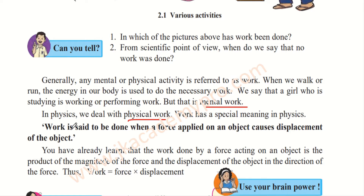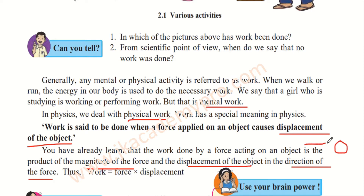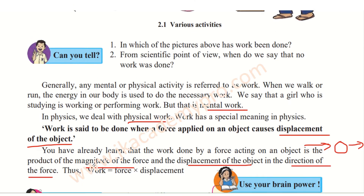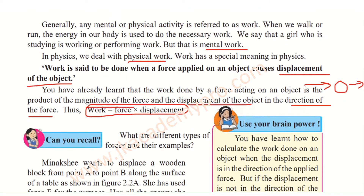Work has a special meaning in physics. Work is said to be done when a force applied on an object causes displacement of the object. Displacement of an object is when the final position of an object is different from the initial position. Work done by a force acting on an object is the product of the magnitude of the force and the displacement of the object in the direction of the force. So if we apply force on a ball and push it in one direction, the ball moves in the same direction. Therefore, work is equal to force into displacement. This is an important formula we will use to solve problems in this chapter.